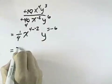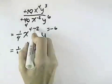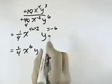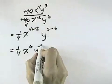So what I'd end up with is one-fourth, and I have x to the 4 minus negative 2 becomes plus 2, which is 6 power, and y to the 3 minus 6 is negative third power.